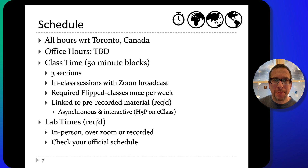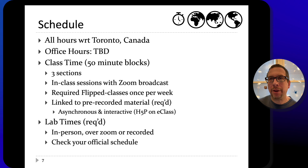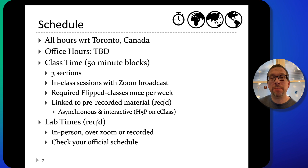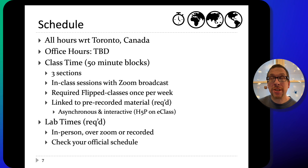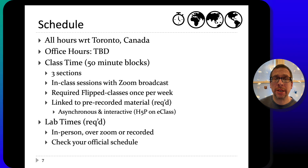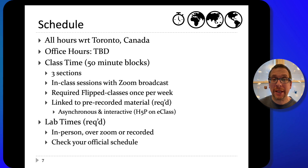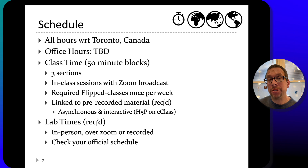In terms of the schedule, all times are with respect to Toronto, Canada. Office hours will be determined later. Class time is based on your personal schedule and how you've registered. There are three sections of the course with about 500 students split between them. Each section meets with me twice a week for 50 minutes at a time. Those in-class sessions will sometimes be regular question-and-answer or informative sessions, and in other cases there will be required flipped-class sessions where we do homework in class. The flipped-class sessions will be linked to material from the previous week's pre-recorded, generally asynchronous and interactive material. Lab times are set in your schedule and are typically in the evenings once a week, depending on your particular registration.